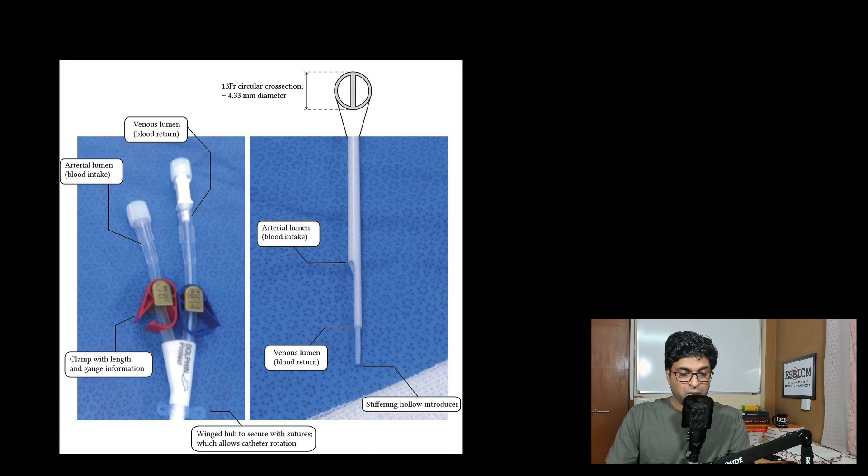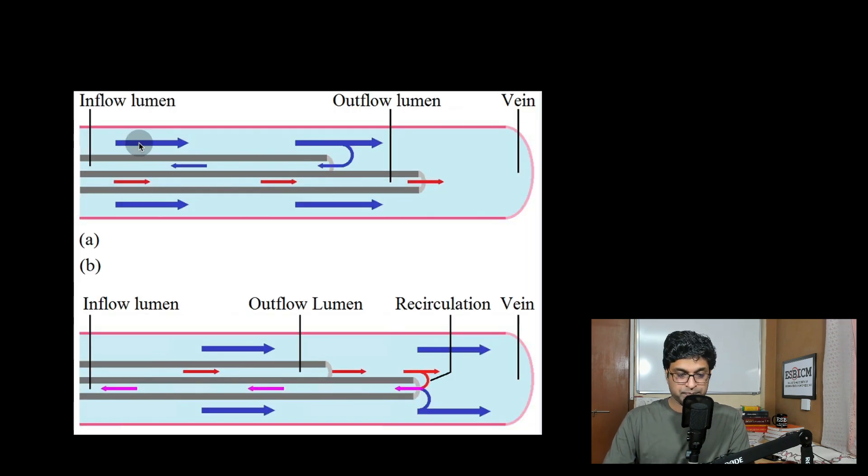Now let's see what will happen if we switch the ports. So this is the normal phenomena and this is when we switch the ports. Now in the vein, the blood is flowing in this direction and this catheter is also placed in this direction.